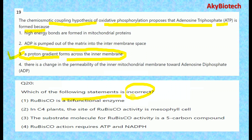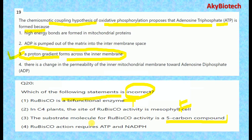Question twenty: Which statement is incorrect? RuBisCO being a bifunctional enzyme is a true statement. The incorrect statement is that in C4 plants, the site of RuBisCO activity is the mesophyll cells. The true facts are: the substrate for RuBisCO is a 5-carbon compound, and RuBisCO action requires ATP as well as NADPH.